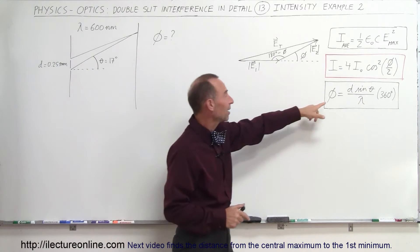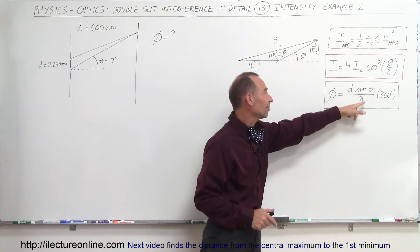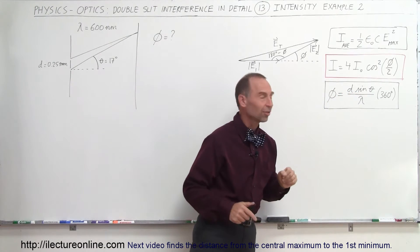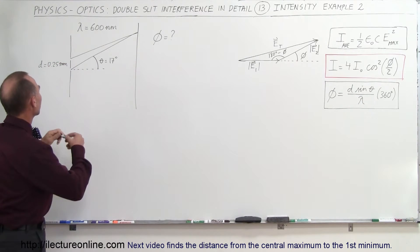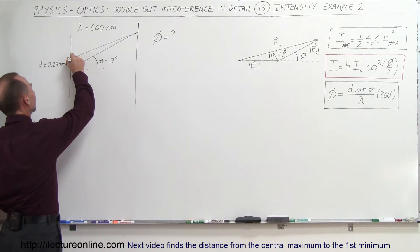Remember, the phase difference can be found by taking d times the sine of theta divided by lambda times 360 degrees or 2 pi radians. Now where does that equation come from? Well, when we look at it over here...